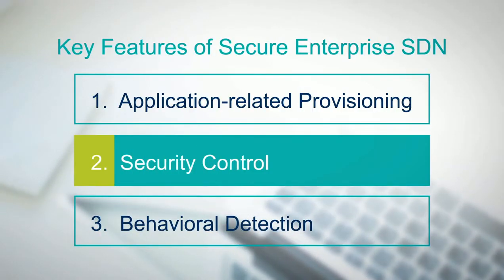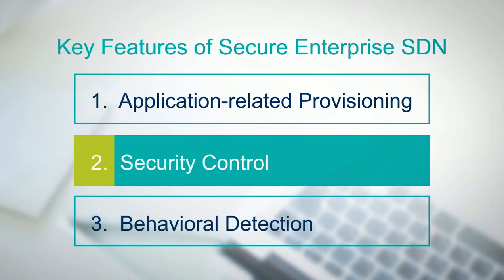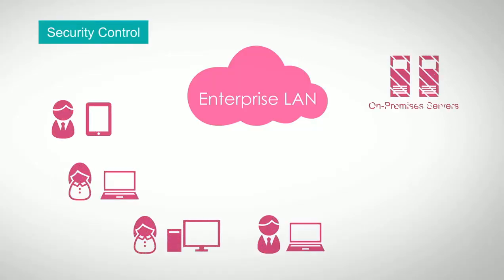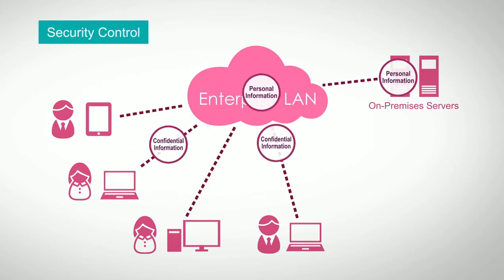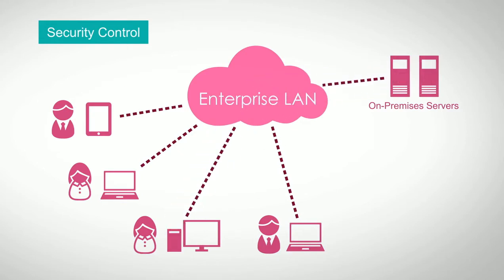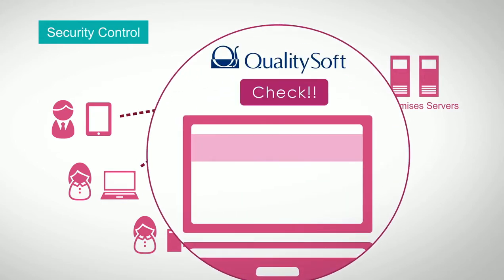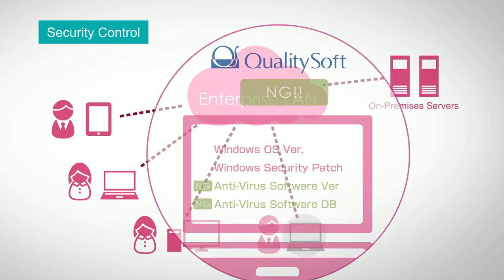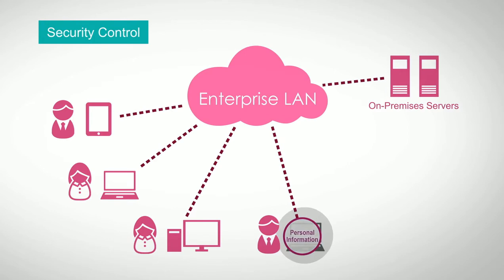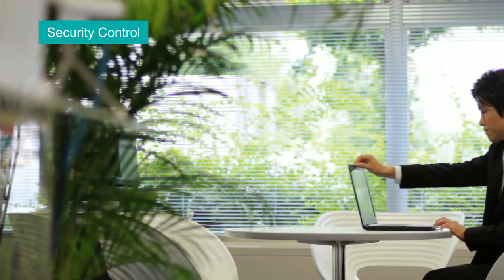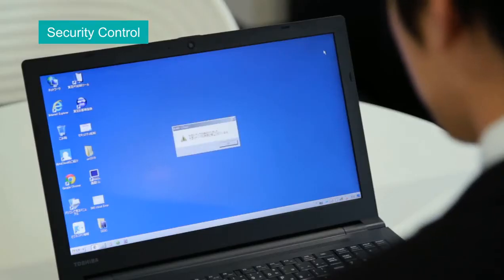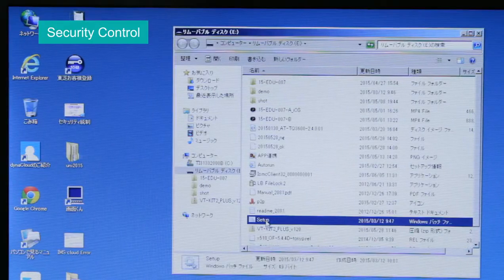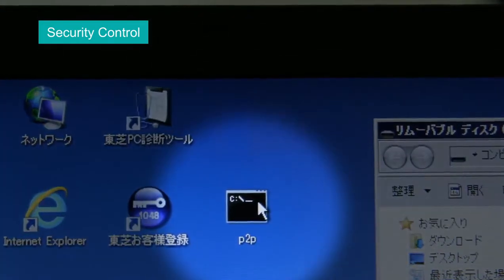The second feature is Security Control by Vulnerability Countermeasure. After devices are granted access through the provisioning feature, the devices will handle various information, including personal and confidential data. In such cases, unless there is high-level security on the device itself, there is a risk of information security incidents such as personal information leakage. Even when banned software is installed on a device and security measures alert the administrator or user following a security policy, the risk of a security incident in the enterprise will not resolve until the infected device is blocked.